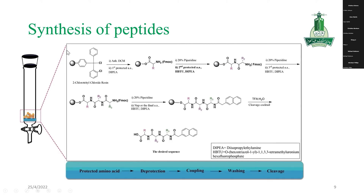We add resin — there are many types of resins, but the best one is 2-chlorotrityl chloride resin. First we swell the resin and add the first amino acid, which usually has a protected side chain. Every time we add an amino acid, we remove the protecting group using 20% piperidine, then we add the next amino acid.